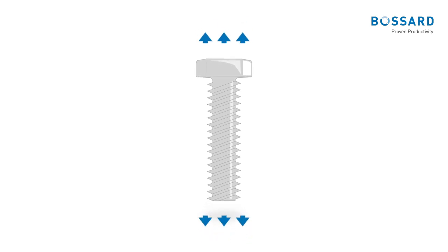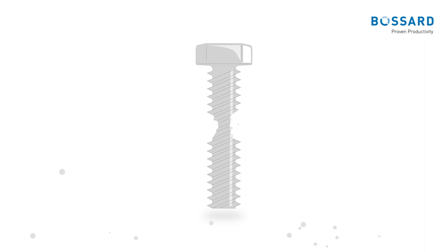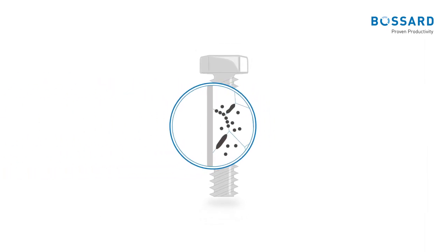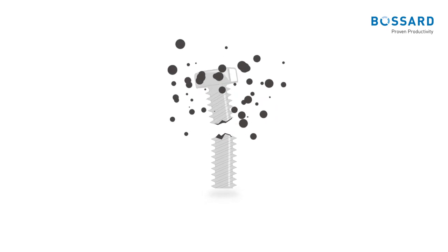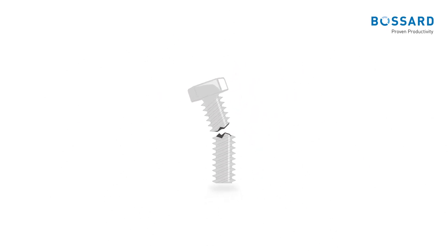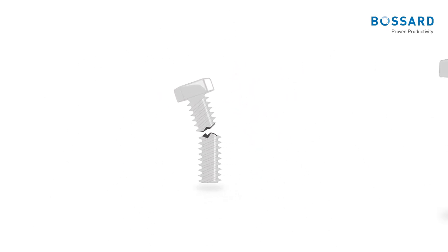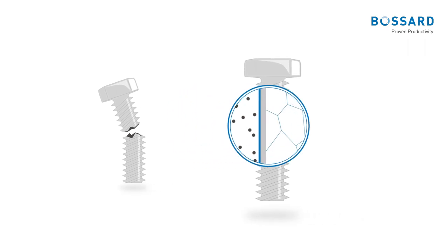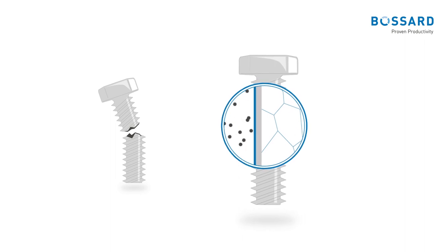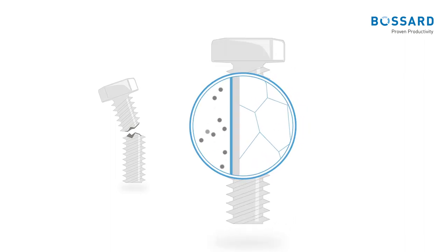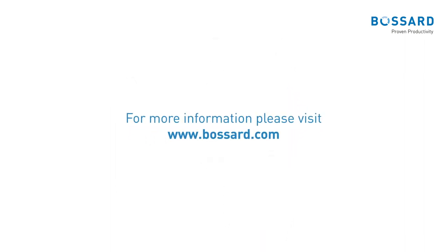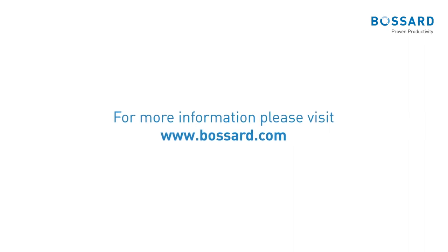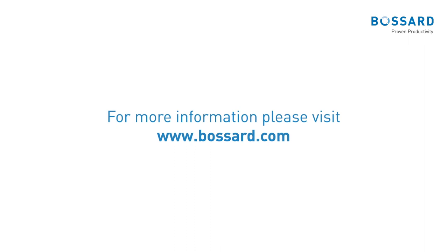The failure of a fastener caused by hydrogen embrittlement is a delayed and brittle fracture, and occurs only after installation when the fastener is exposed to tensile stresses. Selecting an appropriate surface treatment that does not generate hydrogen during the plating process avoids the internal type. For more information, please download the full white paper for free at www.bassard.com.